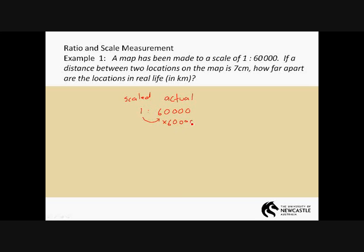The rest of the question says, if a distance between two locations on the map is seven centimeters, how far apart are the locations in real life? Well, seven centimeters, this is telling us it's going to be 60,000 times larger. Seven times 60,000, 7,6 is 42, we've still got our four zeros. So 420,000 of the same units.